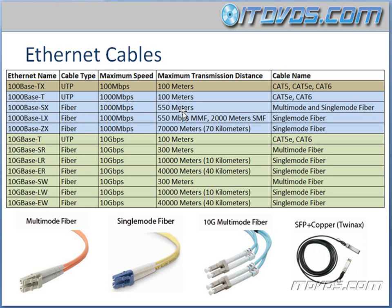If we need to go over 550 meters, we're going to be using long. There's also 1000BaseZX — that's fiber, also 1000Mbps, and this can actually go 70,000 meters or 70km, and this is going to be single-mode fiber. So again, if we need to go over 550 meters for fiber at 1000Mbps, we need to use 1000BaseLX or 1000BaseZX.